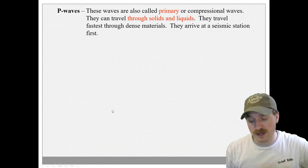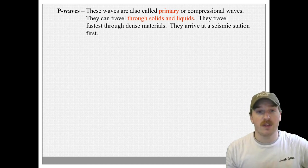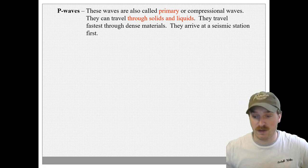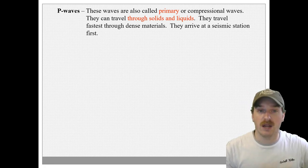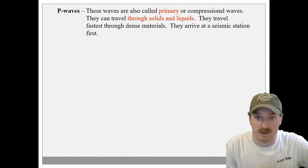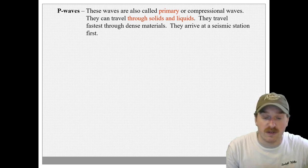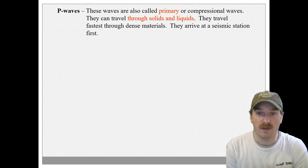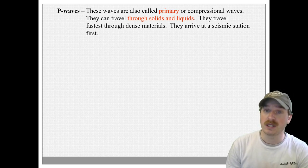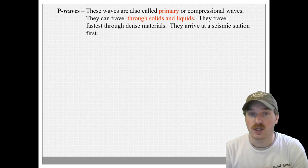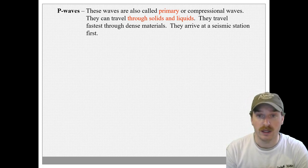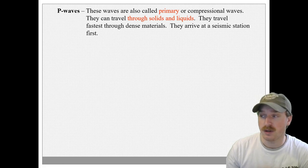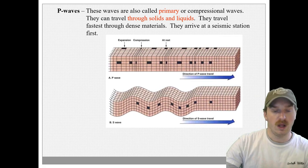When we're talking about waves, there are two main types. The first are called p-waves. Scientists are efficiently uncreative — they like to name things based on the specific category they're talking about. P-waves are called p-waves because they are primary waves — the first waves that happen, and because of their speed they arrive first. P-waves can travel, very importantly, through solids and liquids, and they travel faster through dense materials. They're compressional waves.